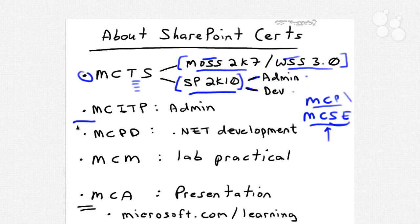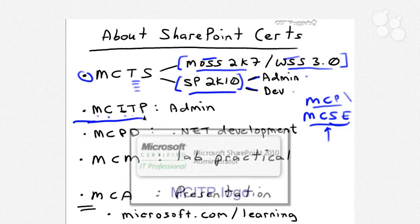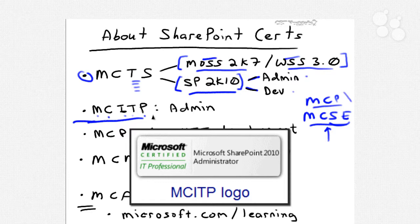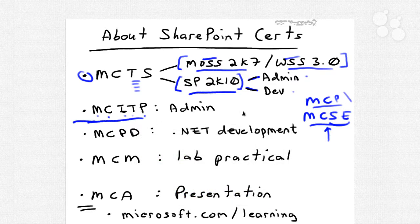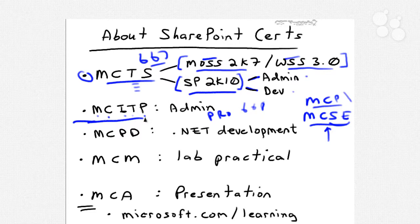The next level — and I would call it the top-tier credential for most working IT pros — is the Microsoft Certified IT Professional, or MCITP. If you're an administrator, you're going to pass the pro exam 70-668, which is what we're studying in this nugget series. You'll have to pass exam 667 to earn your MCTS, and then once you pass 668, you'll have not only the TS in SharePoint Server Administration, but you'll also have the MCITP in SharePoint 2010 Administration.